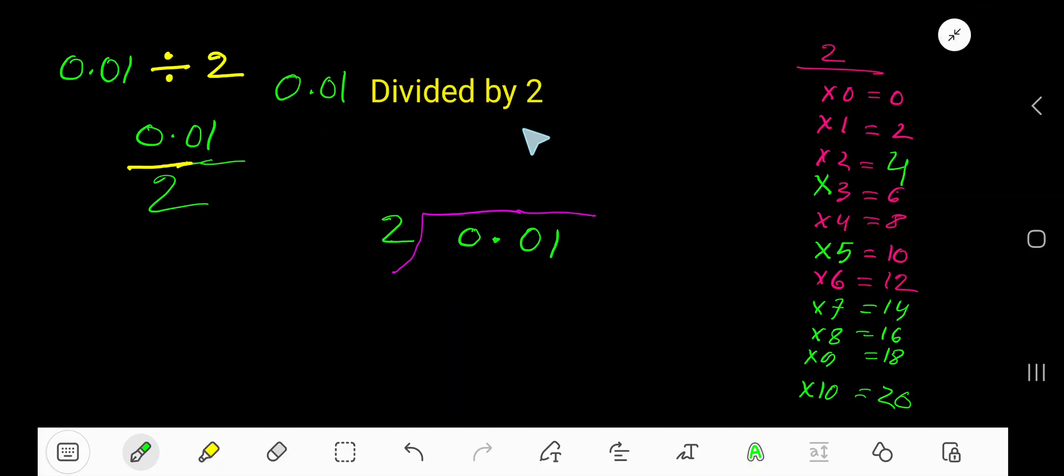0.01 divided by 2. Here 2 is a divisor, so we need the multiplication table of 2: 2 times 0 is 0, 2 times 1 is 2, 2 times 2 is 4, 2 times 3 is 6, 2 times 4 is 8, 2 times 5 is 10.